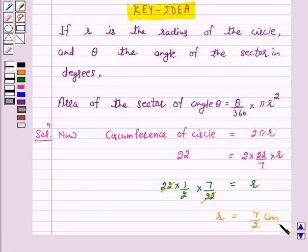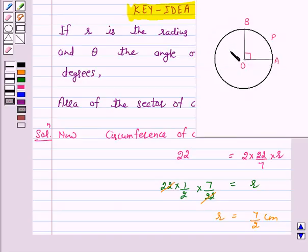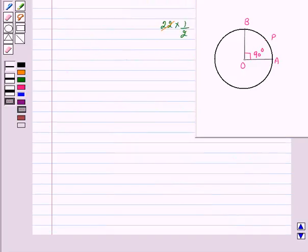Now we want to find the area of a quadrant of a circle, so the angle of this sector at the center is 90 degrees. We want to find the area of a quadrant of a circle whose radius is 7 by 2 cm and angle AOB is 90 degrees. That is, the angle of the sector is 90 degrees.